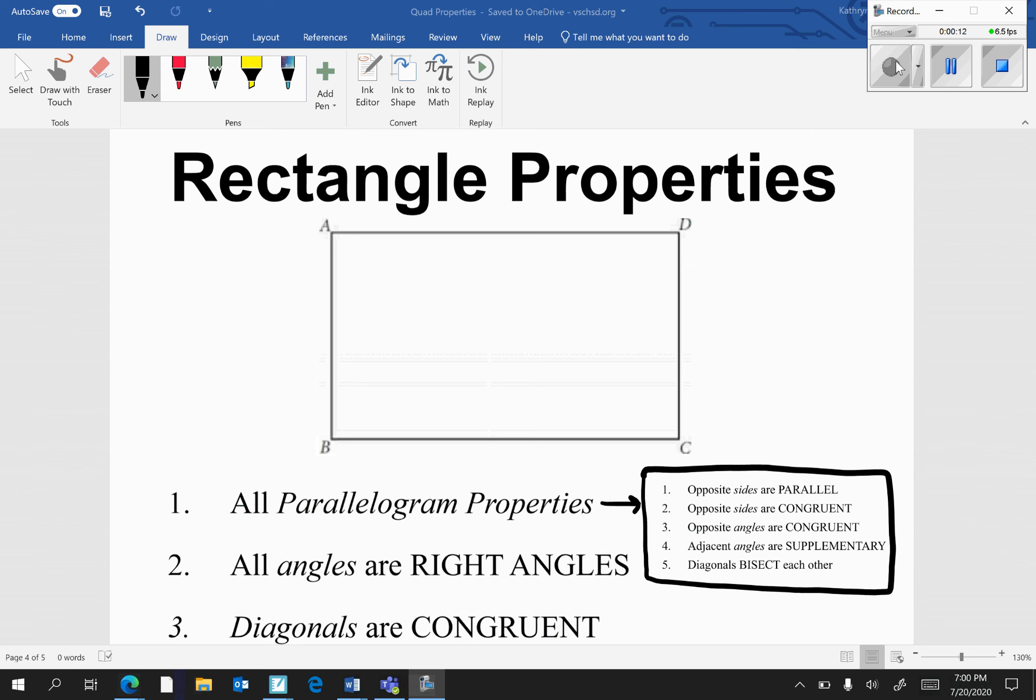Number one, it has all parallelogram properties. Therefore, opposite sides are parallel. AD is parallel to BC, and AB is parallel to DC. Parallel sides are represented by arrows.